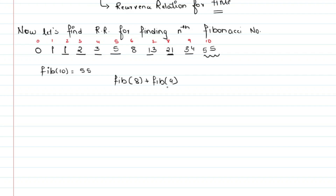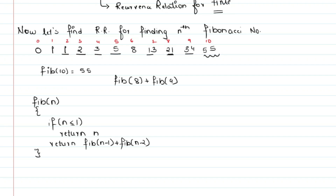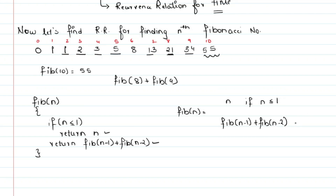Now let me write the recursive code to find the Fibonacci number. This code returns two values: either n, if n is less than or equals to 1, or Fibonacci of n minus 1 plus Fibonacci of n minus 2 otherwise. So this is the recurrence relation for the value.